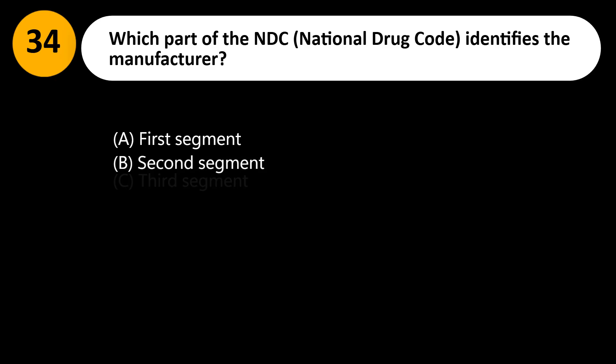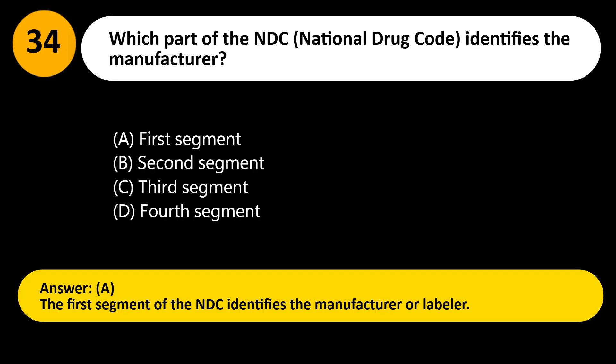Which part of the NDC (National Drug Code) identifies the manufacturer? A. First segment. B. Second segment. C. Third segment. D. Fourth segment. Answer: A. The first segment of the NDC identifies the manufacturer or labeler.